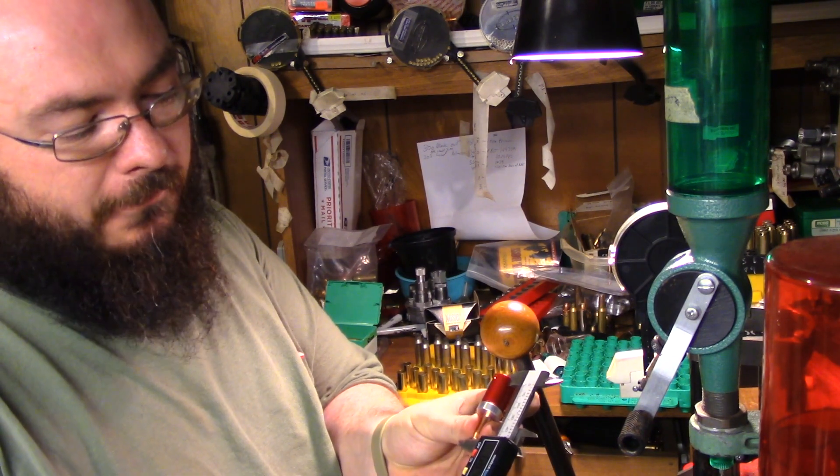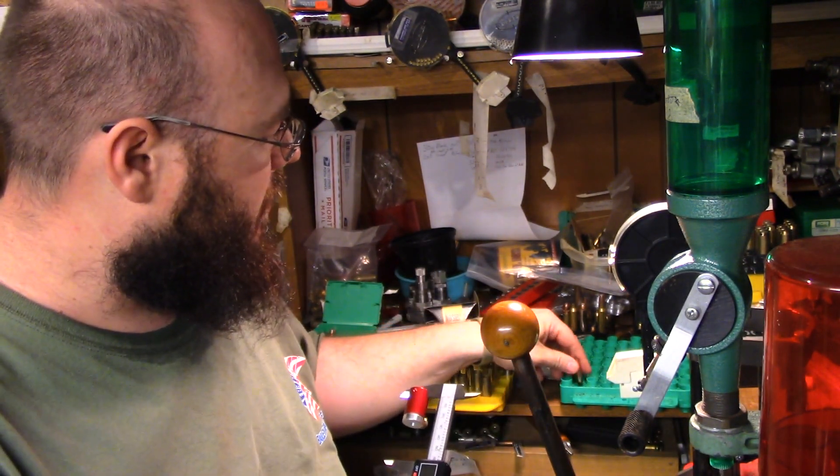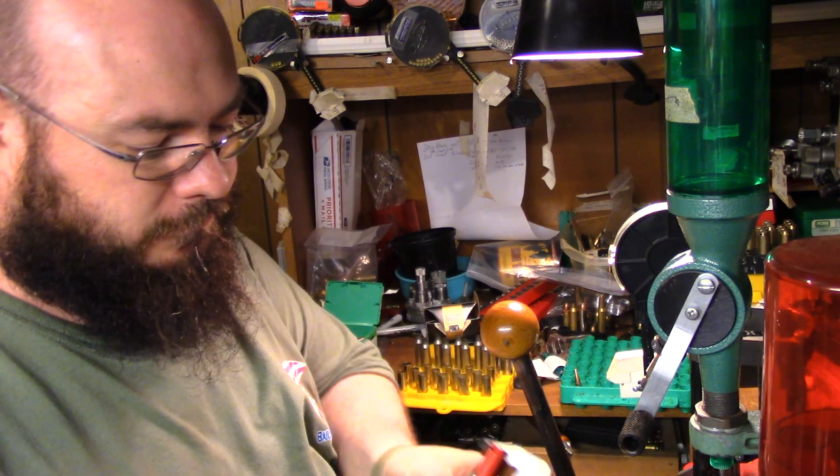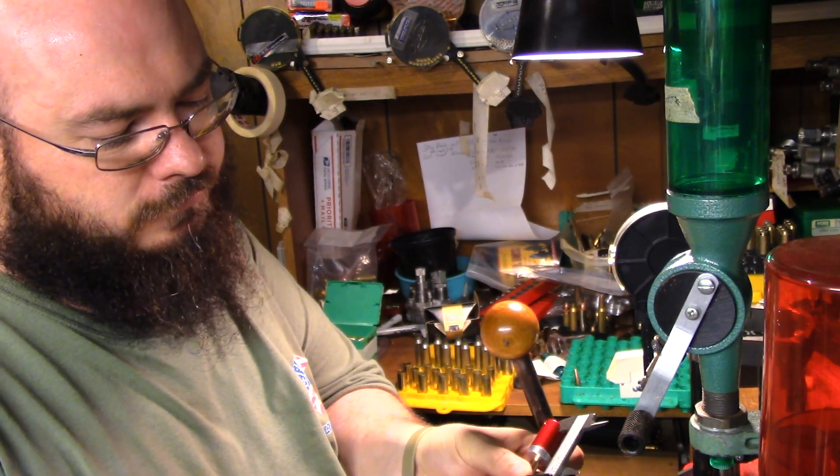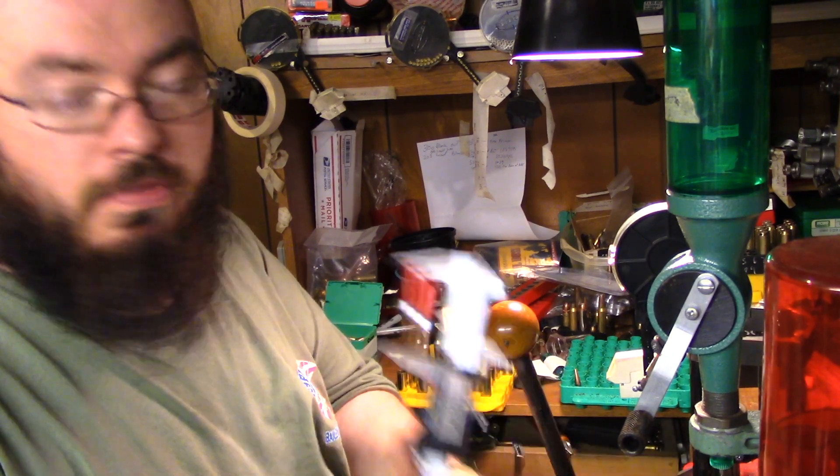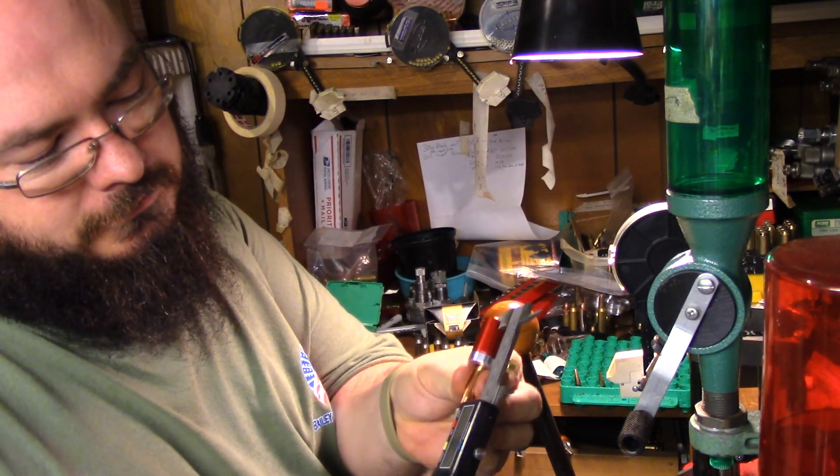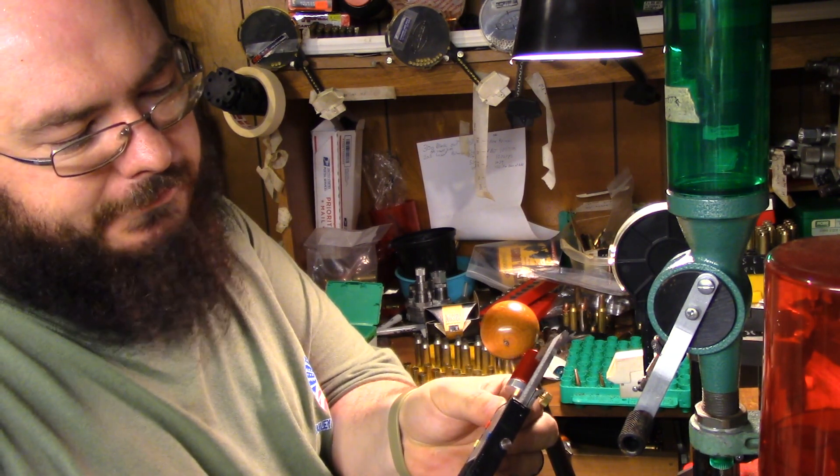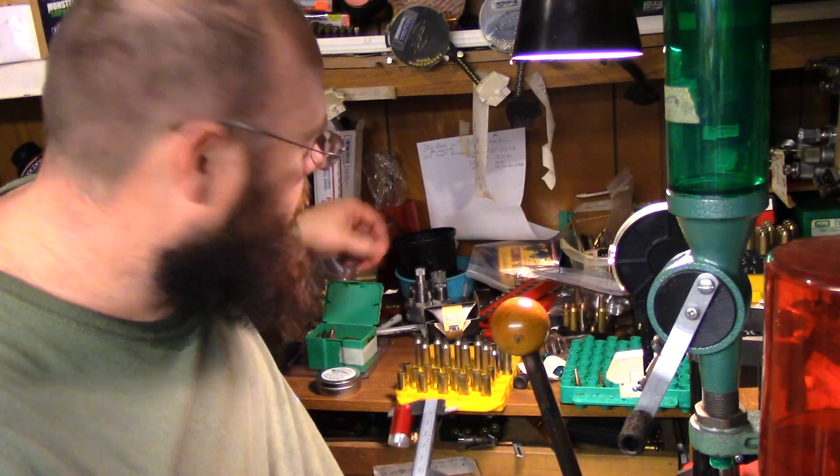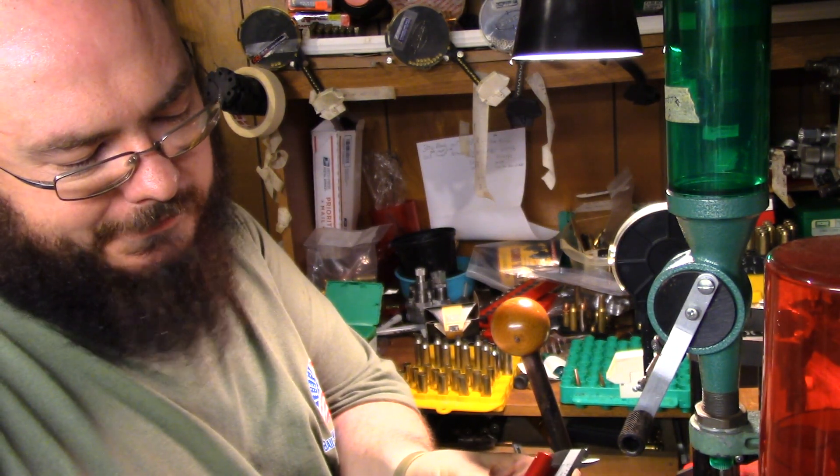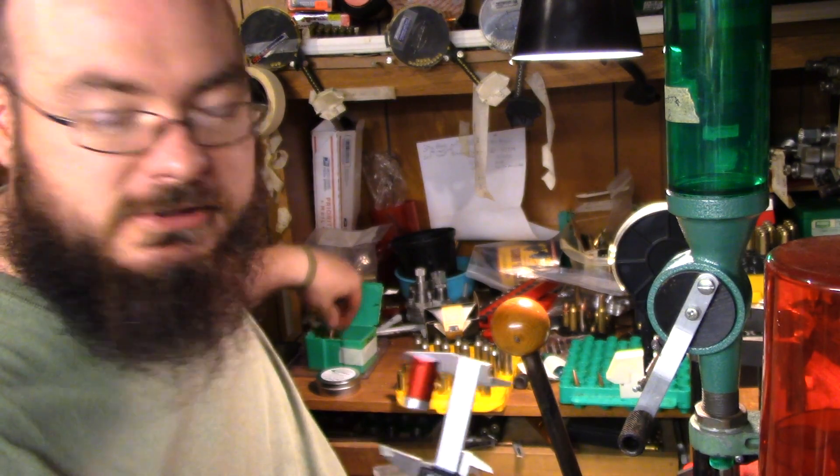We're also going to check the weight on them. Starting out, we're just going to pull them at random. Ogive on that one is 844. Eight forty-five. Eight forty-three. Eight forty-five. One more, that'll be five for comparison. Eight forty-five. Pretty consistent.